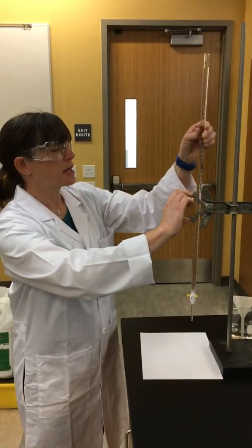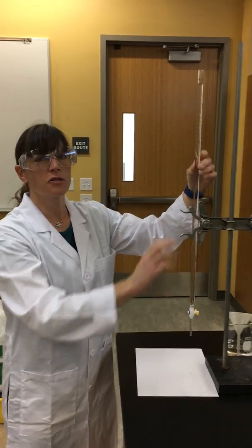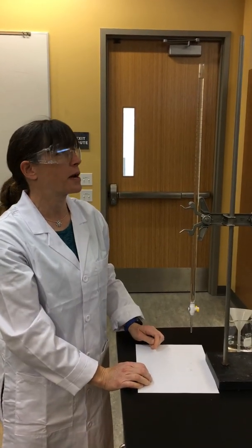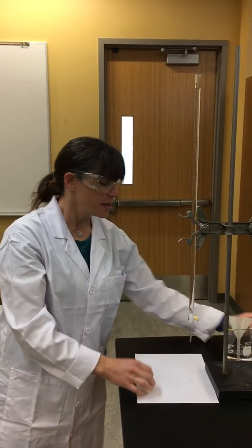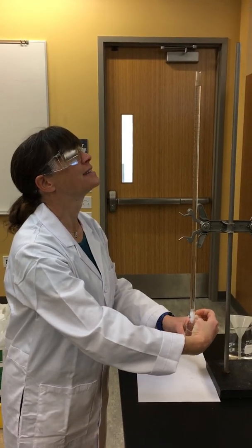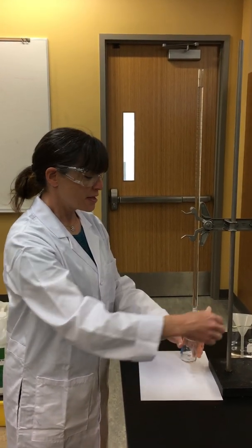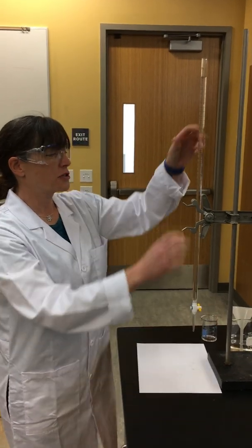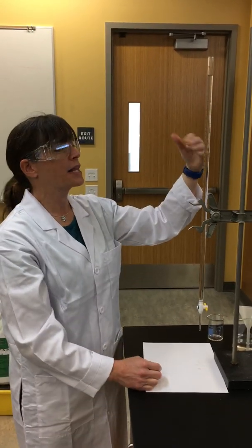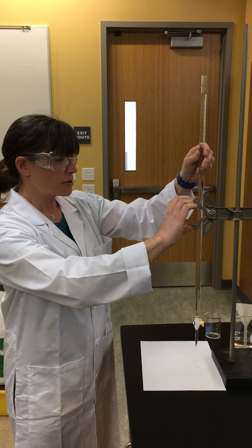The first thing we're going to have to do is record the initial volume of the sodium hydroxide inside of our burette. To be able to do this, I want to make sure the volume that I'm reading is at eye level.